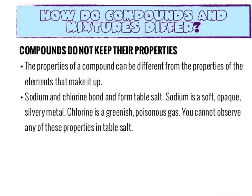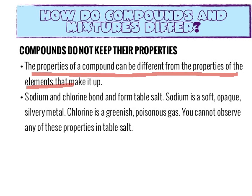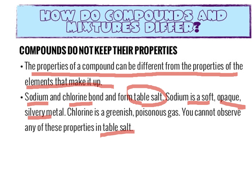Next, compounds do not keep their properties. The properties of a compound can be different from the properties of the elements that make it up. Sodium and chlorine: when combined, they produce table salt. In table salt, we no longer see the sodium as an opaque silver metal, and we no longer see the chlorine as a greenish, poisonous gas. What we see is only the resulting table salt. That is why compounds do not keep their properties.